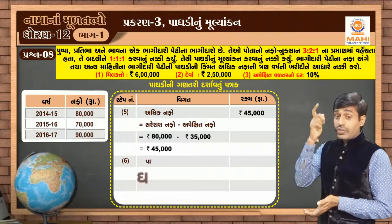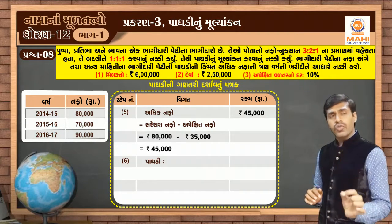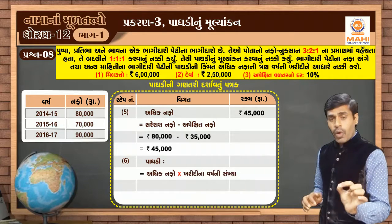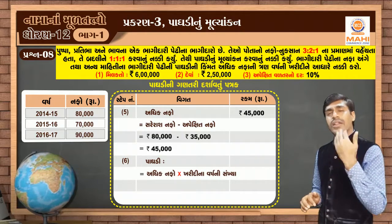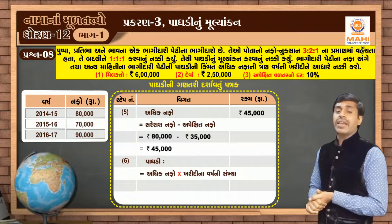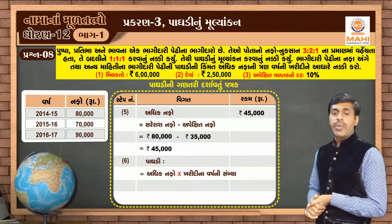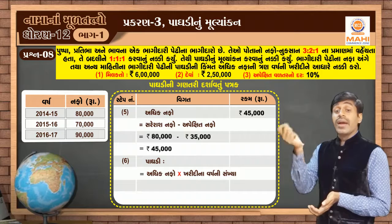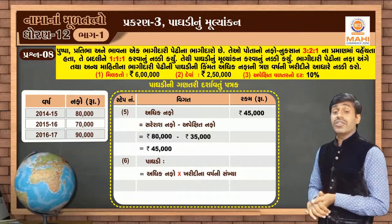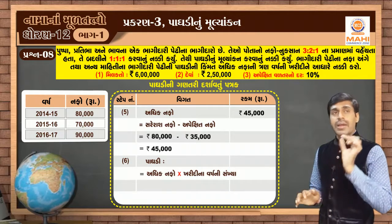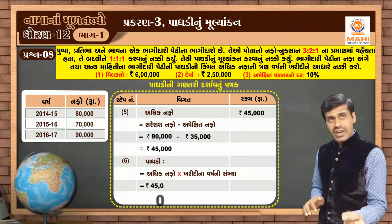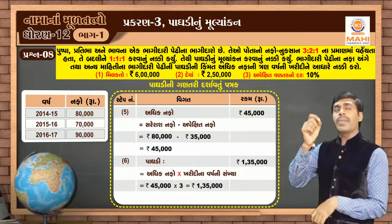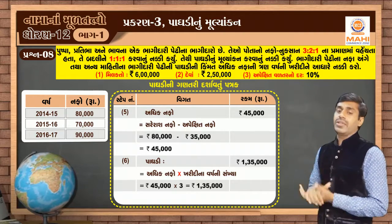The next step is the second step. And in the second step, this is a case of 1,500,000, and the case of 1,500,000.